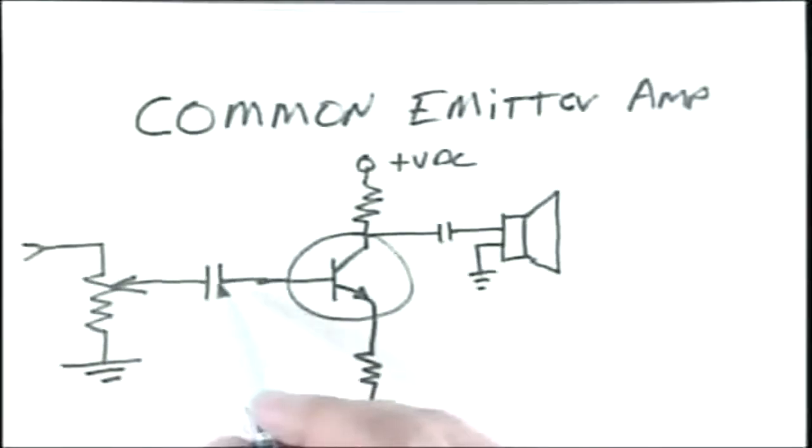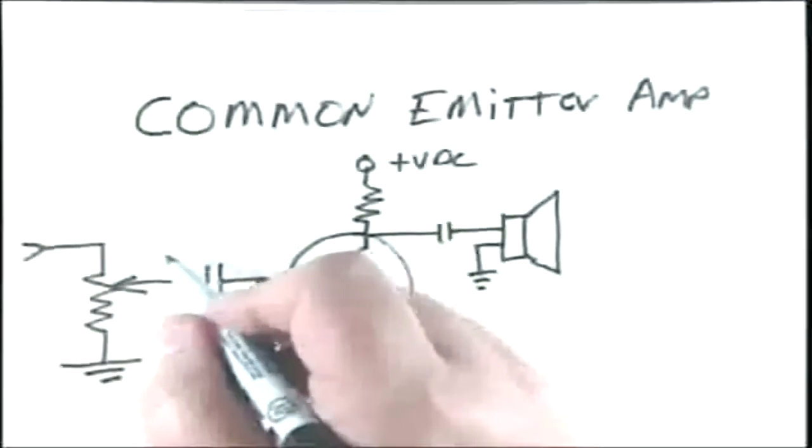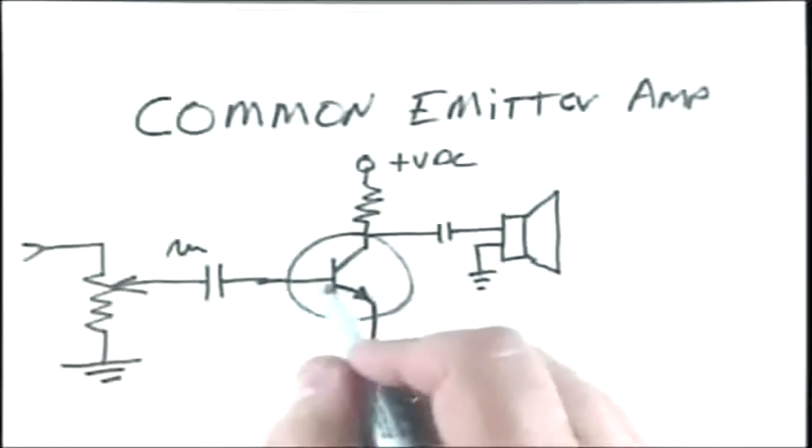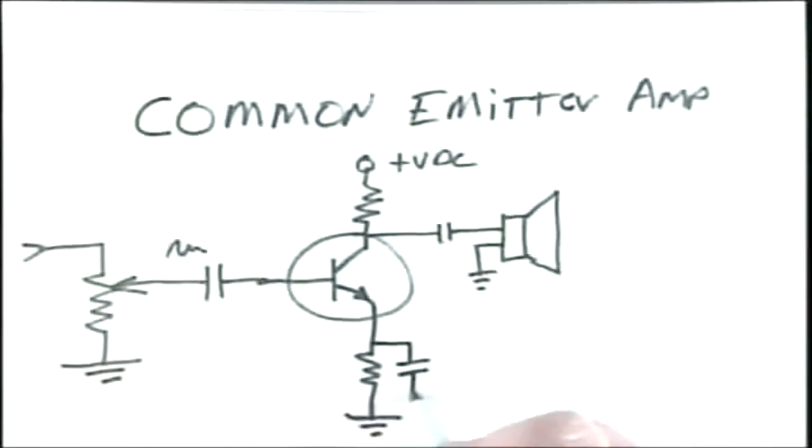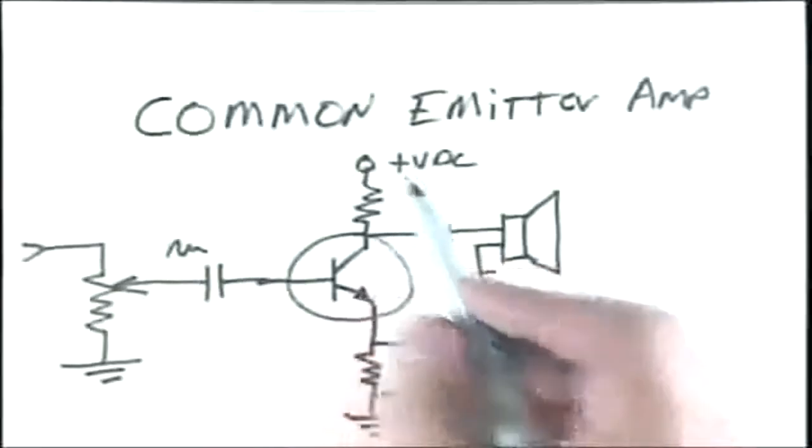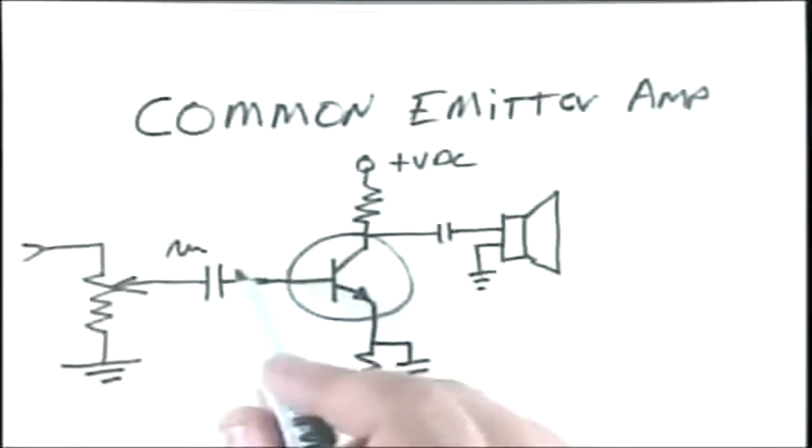The capacitor is here to decouple DC but pass AC. So we still have our signal here. And we're feeding it to the base of this transistor. This is an NPN transistor. And sometimes we put a little capacitor here on this biasing resistor at the bottom of the emitter to allow the signal to work better and amplify better. And so when we apply our signal to the base of this transistor, then that will control.